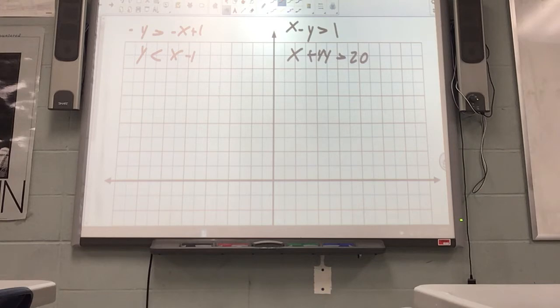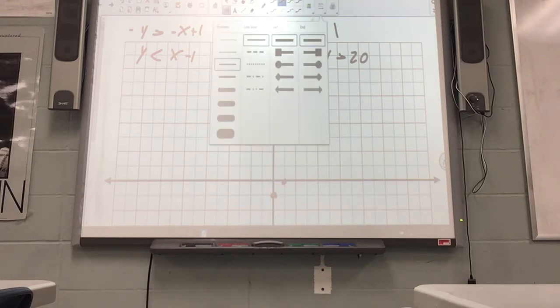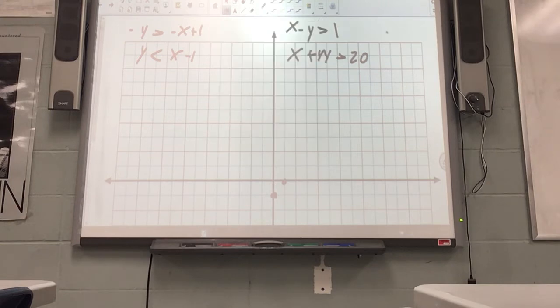Y intercept's negative 1, so I go down to 1 and put a dot. From there, what's the slope? What's the number in front of the x? 1. There's no number, it's understood 1. So from this dot I rise 1, run 1. Do I need to connect this line with a solid line or a dashed line? Dash. Why is it that? Because it doesn't have the equal bar underneath it. Look at that. Pretty dashed line.